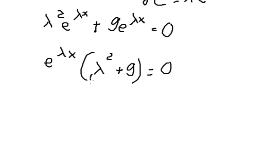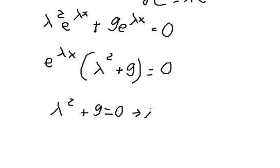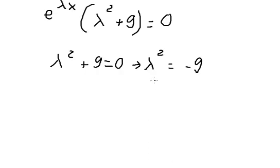So we need to find the solution. We move 9 to the right side, so we have lambda squared equals negative 9. We take the square root of both sides, so lambda equals negative 3i, and the second solution lambda equals positive 3i.